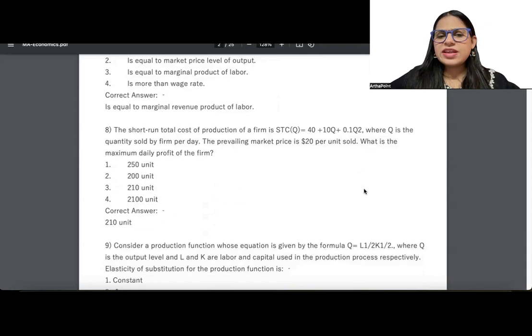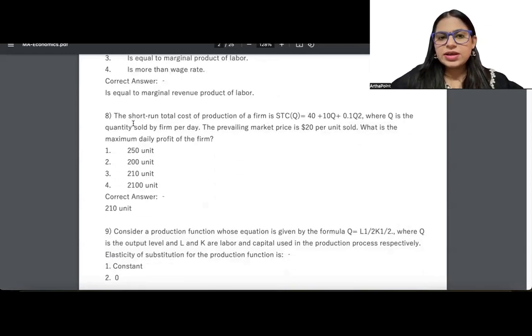You need to do some very basic questions. For example, if you just look at this one, you are given the short run total cost function and the market price, and it asks you what is the maximum daily profit of the firm. It's very simple - you can just equate MR to MC. Let me just show you this numerical once.